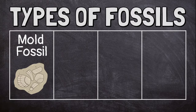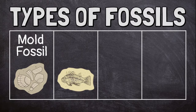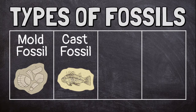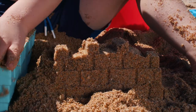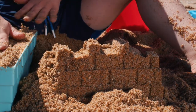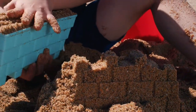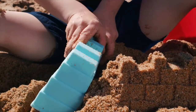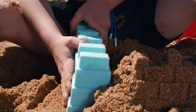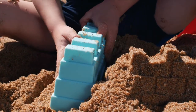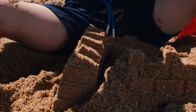Sometimes an imprint or mold left by a plant or animal is filled with minerals that harden into rock. When this happens, it's called a cast fossil. If you've ever made a sand castle at the beach, then you've made a cast. When you fill the bucket or mold with sand and turn it over, your castle keeps the shape of the container.